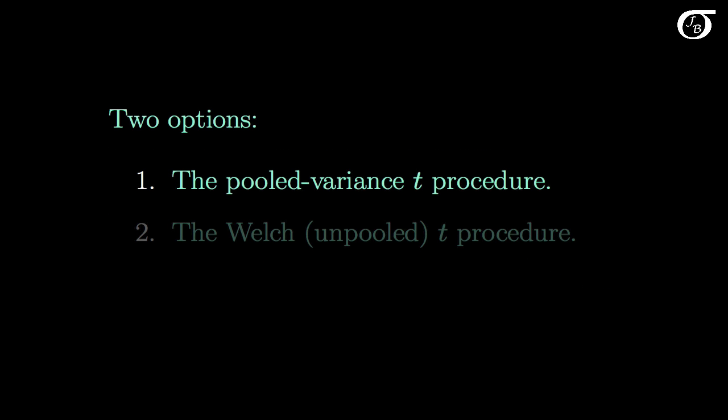So here we have an added complication, and we have two workarounds. If we feel comfortable assuming normality, there are two options available for us. One is the pooled variance t-procedure, in which we assume the two populations have the same variance. We pool the two sample variances together, and we end up with something that has exactly a t-distribution.